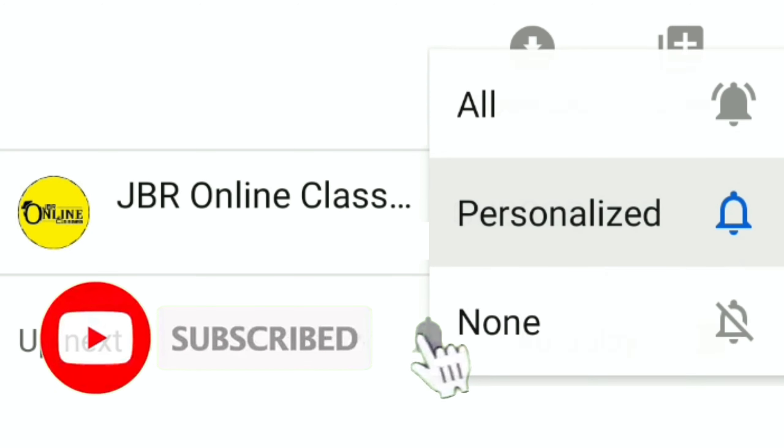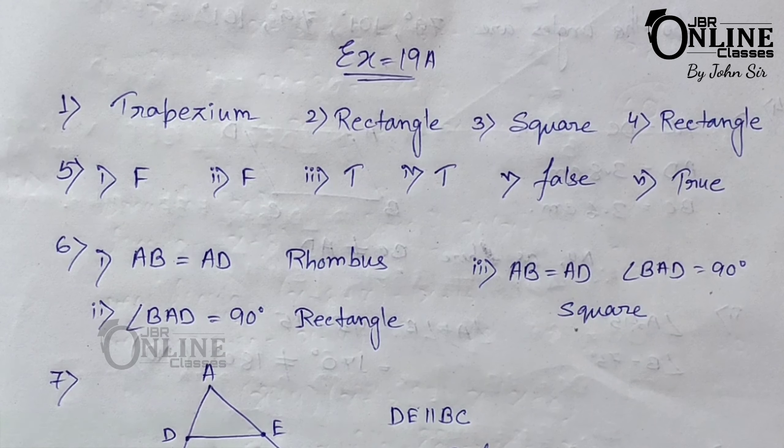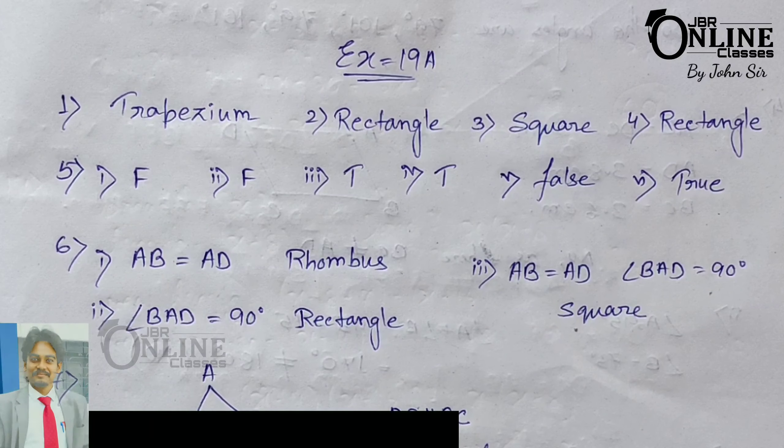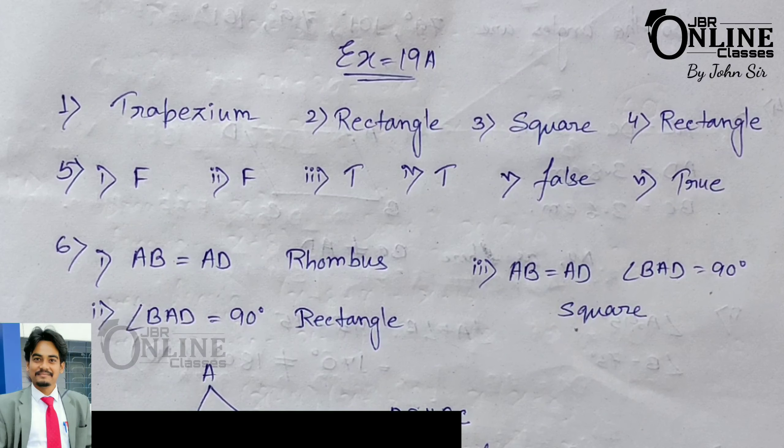Welcome back to my channel JBR Online Classes. Please subscribe and press the bell icon. Today I'm going to start Exercise 19A. Here the first problem: what would you call a figure having four sides out of which two opposite sides are parallel?